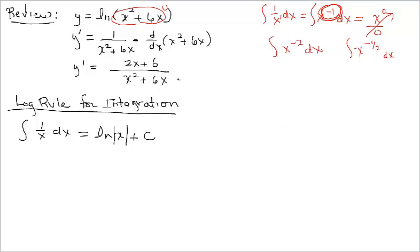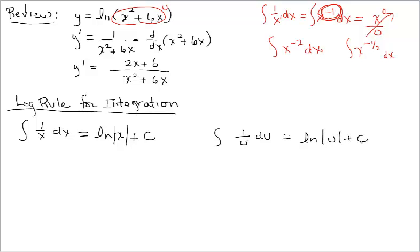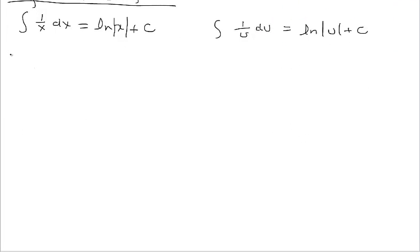Let's look at the other integration rule we're mostly going to use. When we have a composite function and we have 1 over u du — where u represents an inside function — if we can set up an integral in this form using u-substitution, then we can integrate it back to the natural log of the absolute value of u plus c. Let's look at some quick examples.